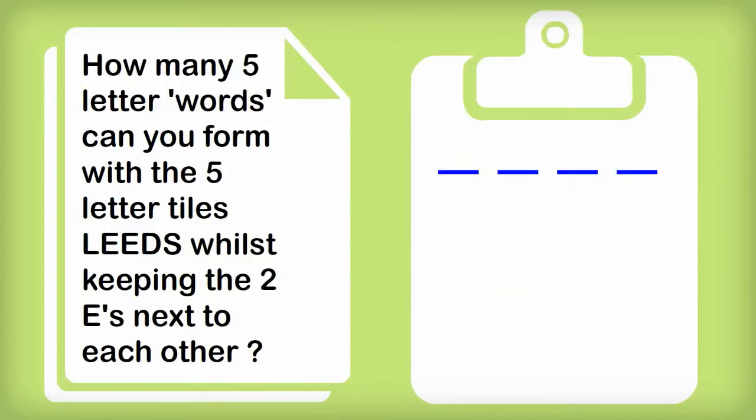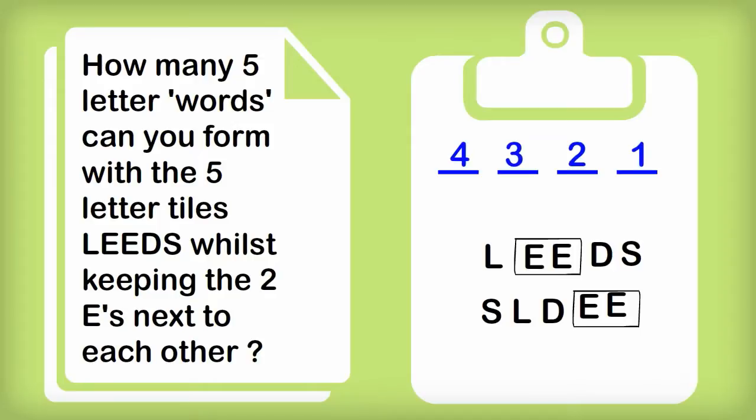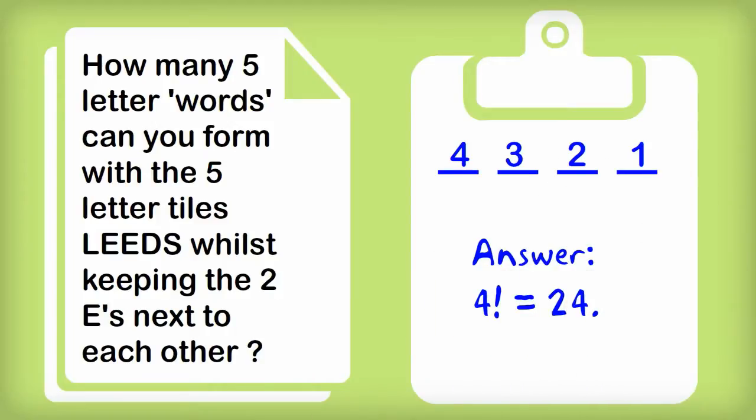In this case, one way we can think about this is that the two E's can be sort of hooked together or put in a box or in some way kept so that they're next to each other. So they effectively become like one letter. So the way to think of this is that there are four letters L, the double E, D and S. So we use four dashes and we go four by three by two by one. And so the answer is four factorial, which is equal to twenty-four.